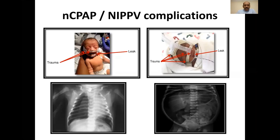The most important complications of non-invasive modes are trauma, usually because the device is not fitted properly or not monitored properly when applied for a continuous period of days. Because of a poorly fitting device, you can also have a leak. In some studies, high rates of pneumothorax, and very rarely pneumoperitoneum, have also been reported — though usually associated with comorbidities.